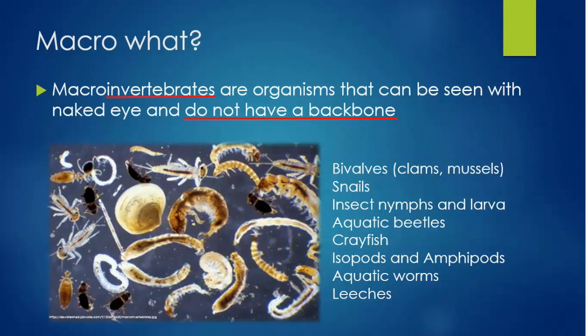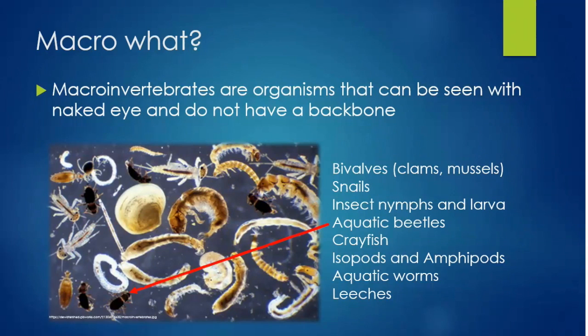There are a wide variety of macroinvertebrates, including bivalves, insect nymphs and larvae, aquatic beetles, and aquatic worms.